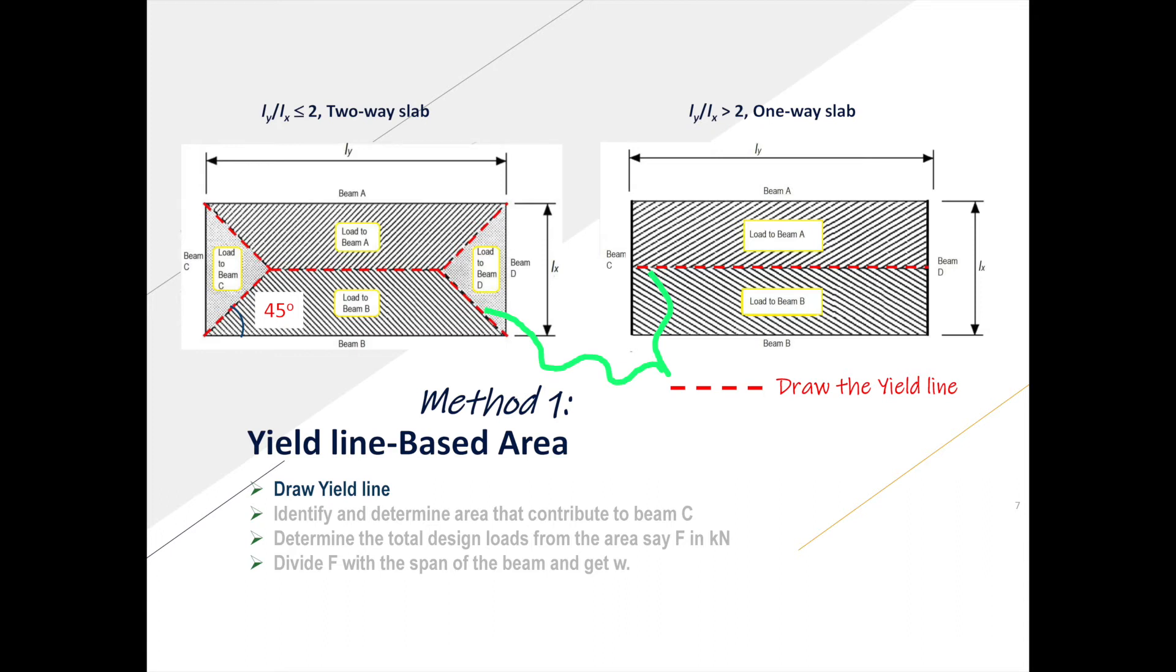To note, angle between the inclined yield line to the edge of the slab is assumed as 45 degrees in two-way slab. The construction of yield line is not the scope in this video.